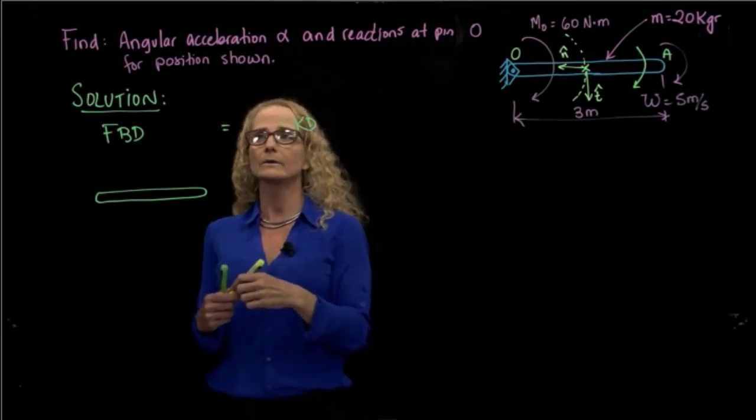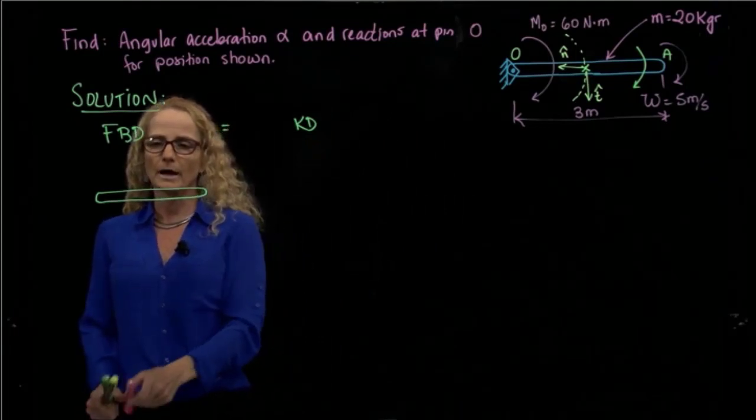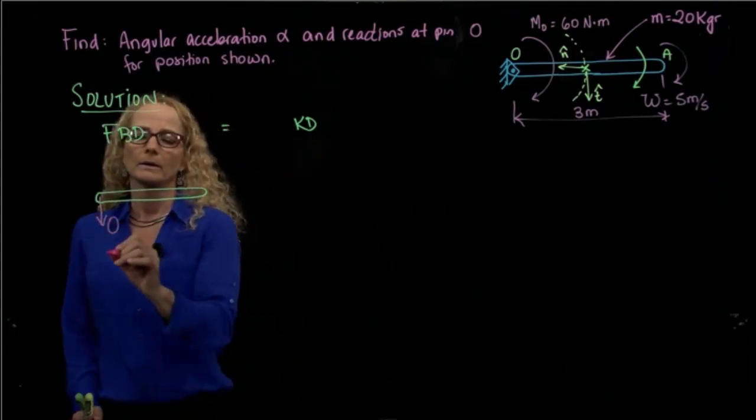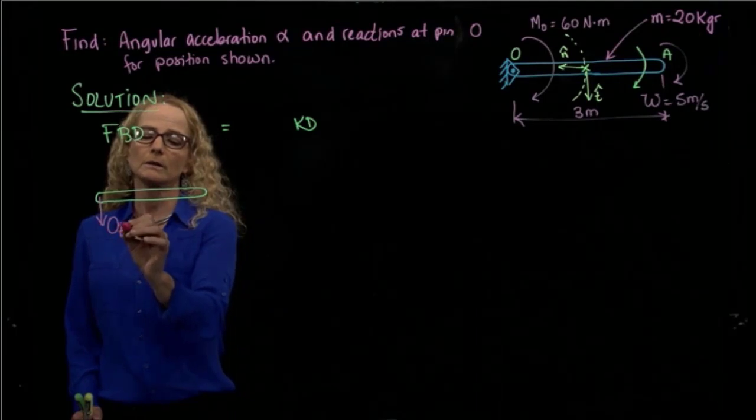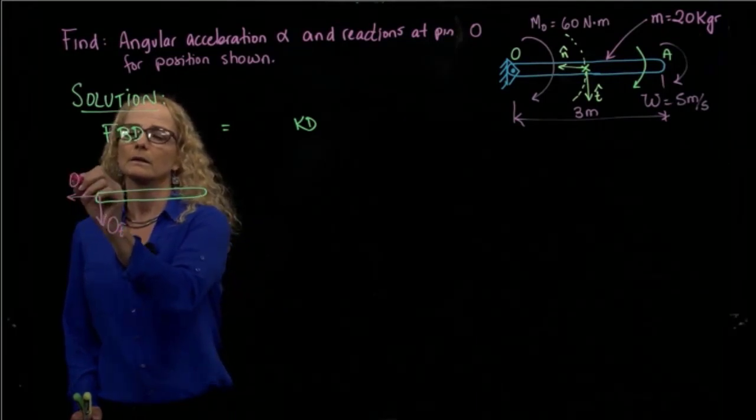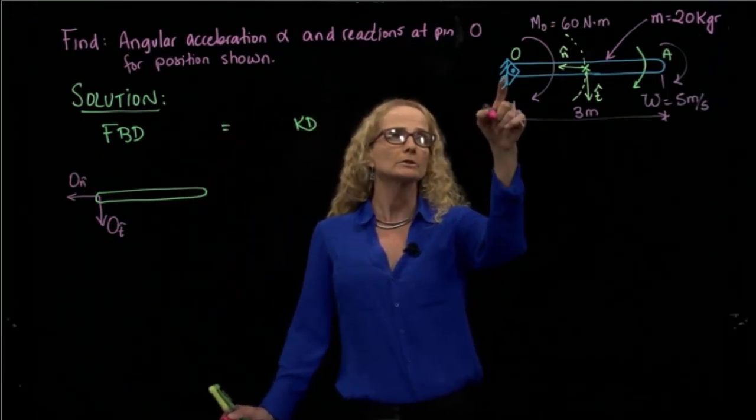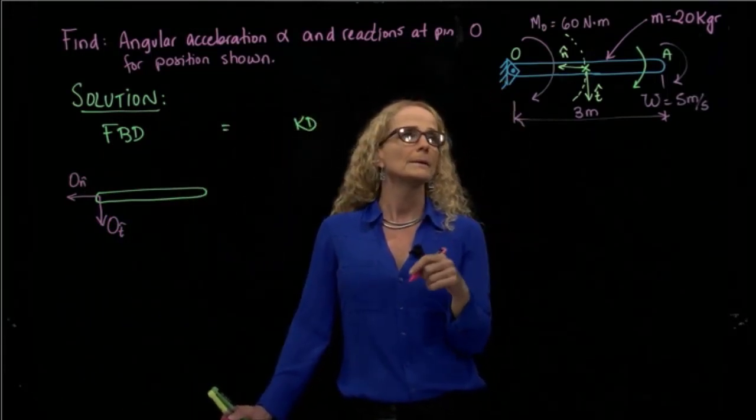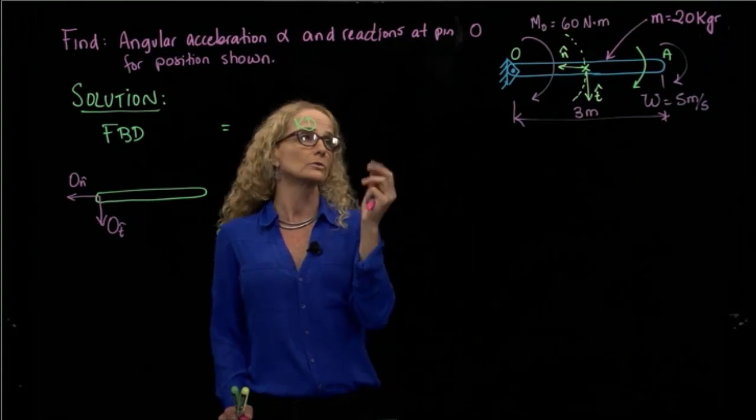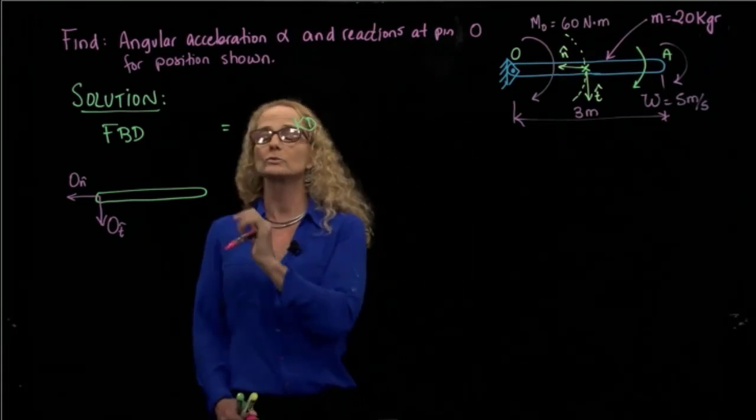Using that coordinate system, I can write my reactions in T direction and in N direction. So we have two reactions in O because we have a pin, and that pin restricts two degrees of freedom, so that produces two reactions.